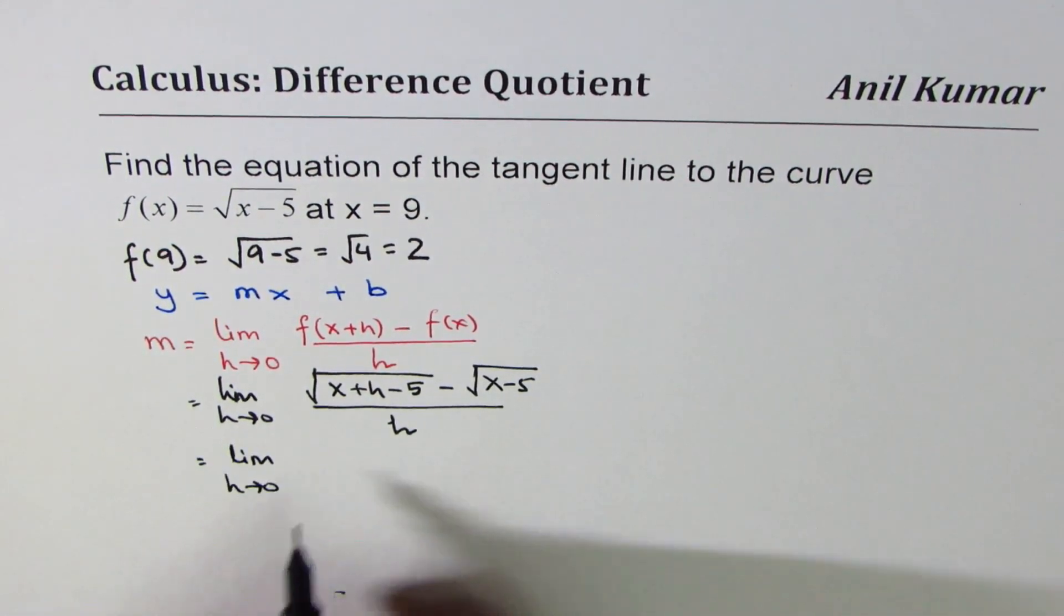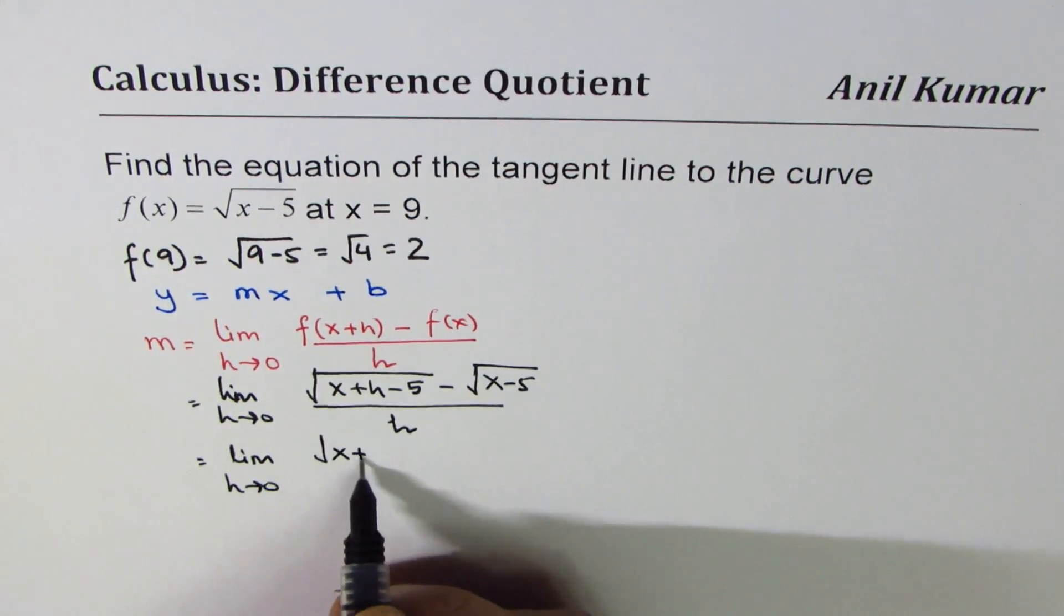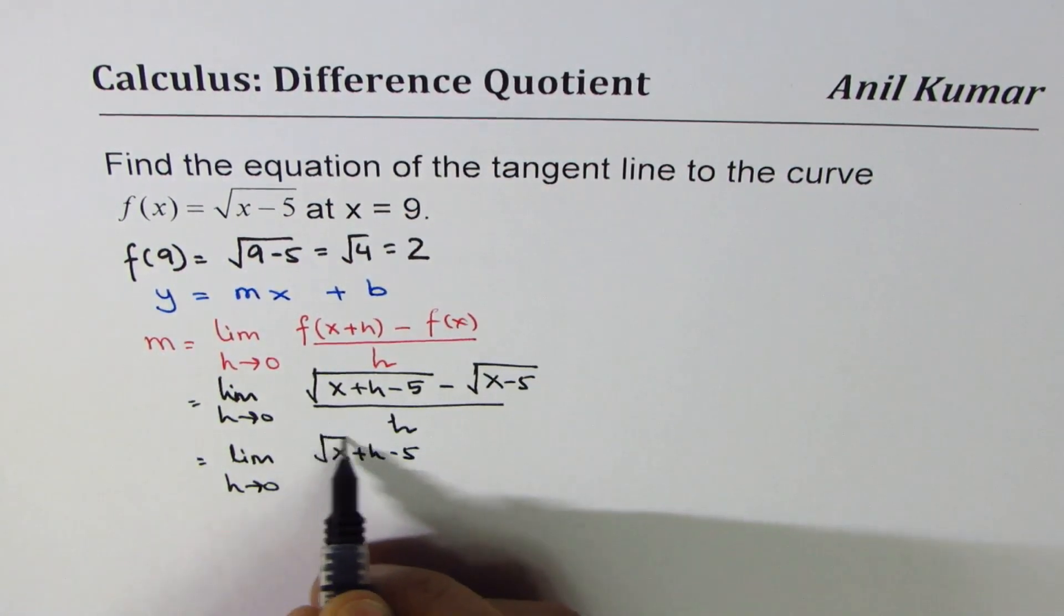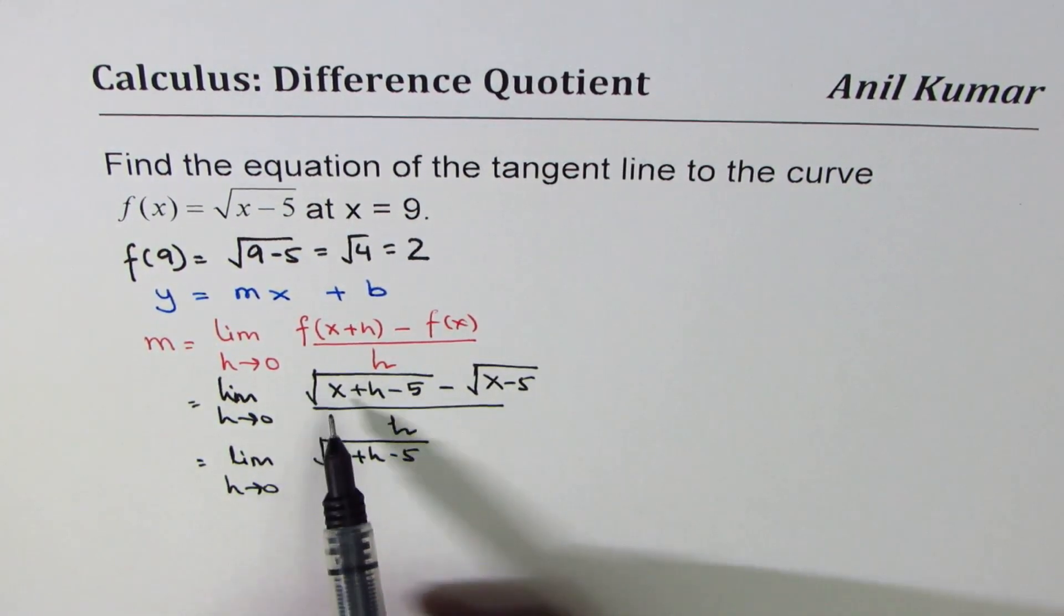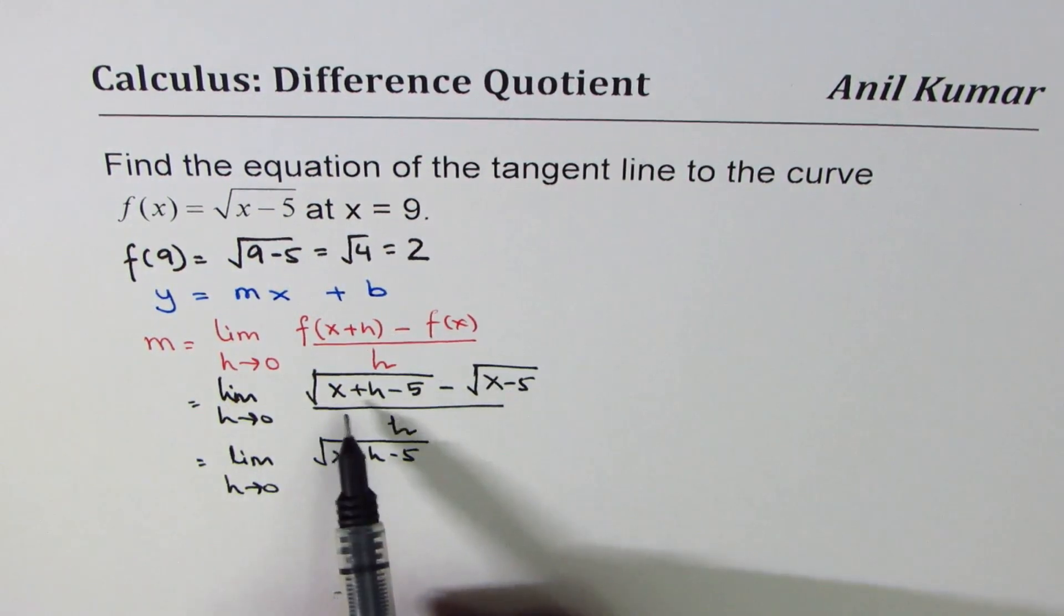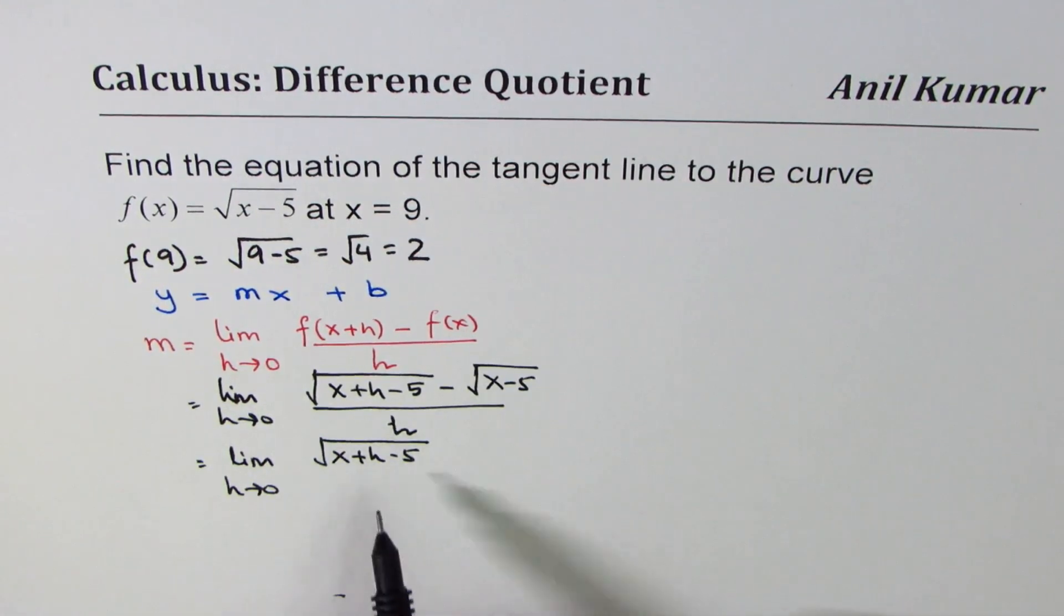So we have limit h approaches 0, square root of x plus h minus 5. I'm actually providing a general solution. I could have replaced x with 9. It becomes simpler. So you could replace x with 9 in all this.